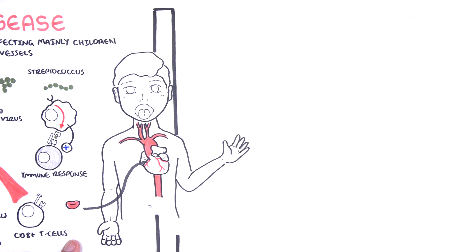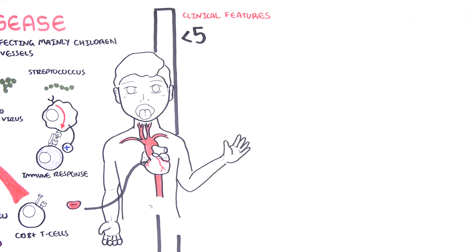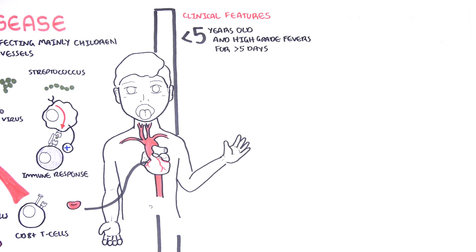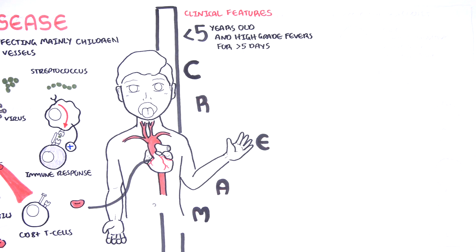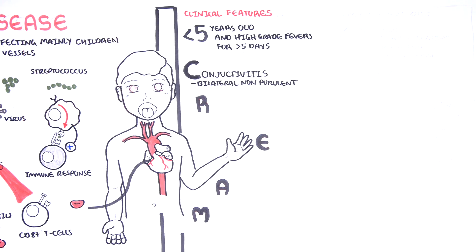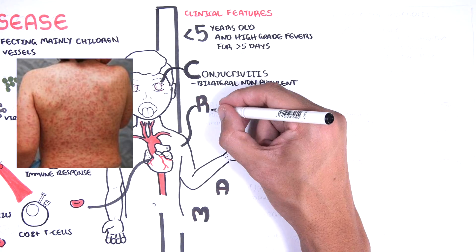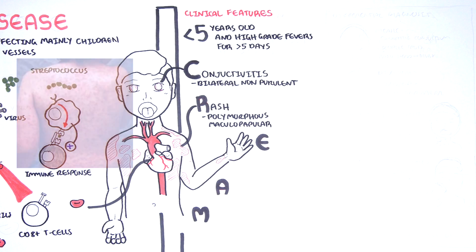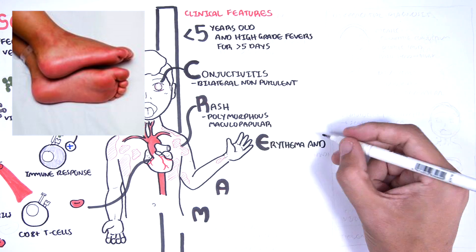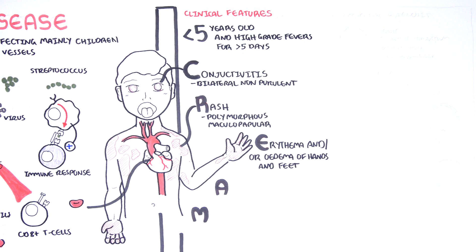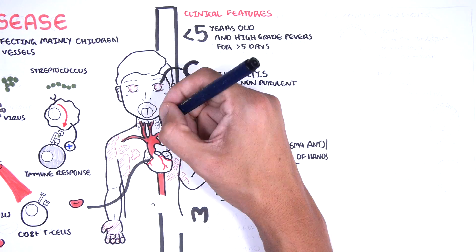The clinical features of Kawasaki disease typically present in a child less than 5 years old with high fevers for more than 5 days and irritability. Classic findings can be remembered with the abbreviation CREAM: C is for conjunctivitis — bilateral, non-purulent; R is for rash — polymorphous or maculopapular; E is for erythema and/or edema of the hands or feet; A is for adenopathy — lymphadenopathy specifically within the cervical chains.